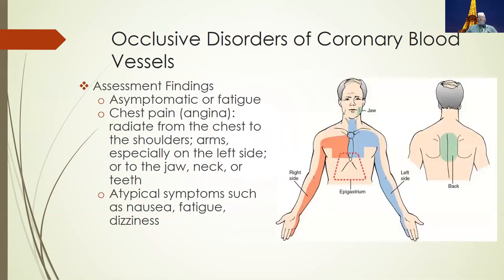Assessment findings: asymptomatic or fatigue — most people experience fatigue before they ever have chest pain or angina. They just don't have the energy they used to. Chest pain or angina usually feels like pressure or indigestion. It can also radiate to the left shoulder, arm, fingers, jaw, neck, and back. Atypical symptoms such as nausea, fatigue, and dizziness also occur.